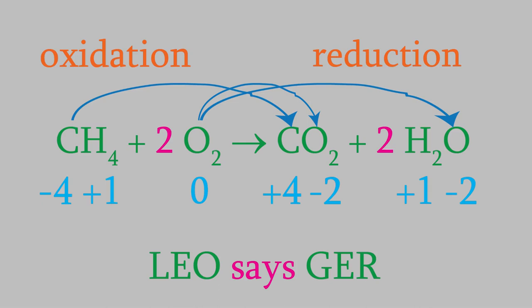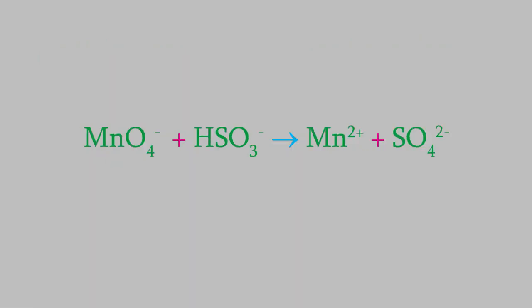Now that we know how to find the charges on atoms, it turns out we can use this to balance some pretty complicated reactions. Some redox reactions can be difficult to balance if we try to do it in the usual way. For example, consider this redox reaction in which permanganate ion and bisulfite ion react to form manganese 2 ion and sulfate. One big problem is that there's a hydrogen atom on the left side but none on the right — there must be some ion or molecule missing from the reaction. But fortunately, there is a method we can always use to balance redox reactions, even very tricky ones like this.